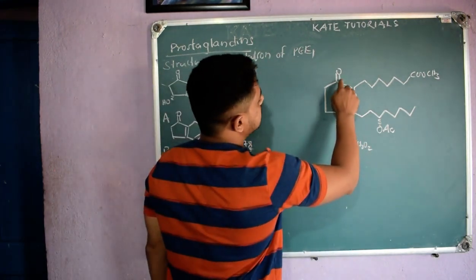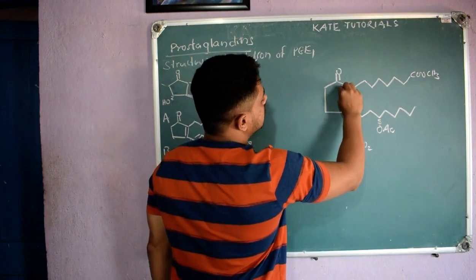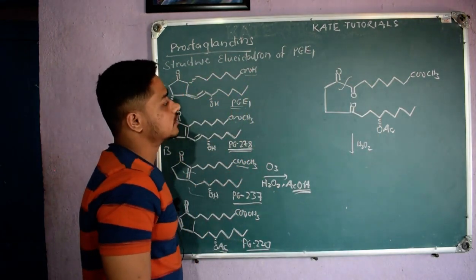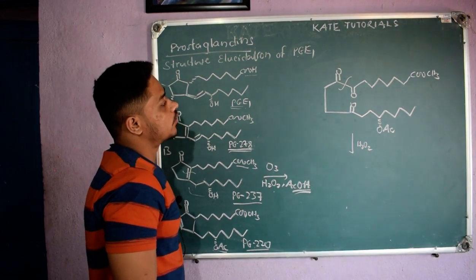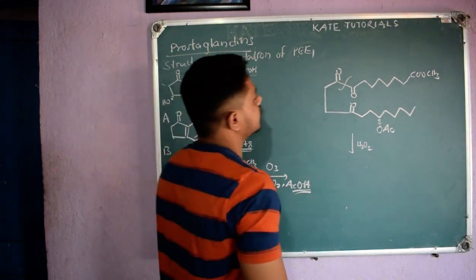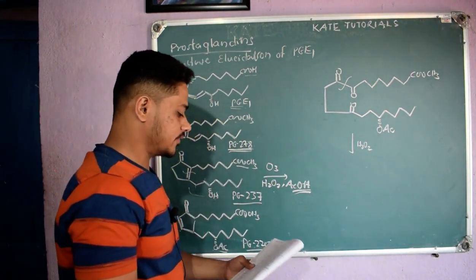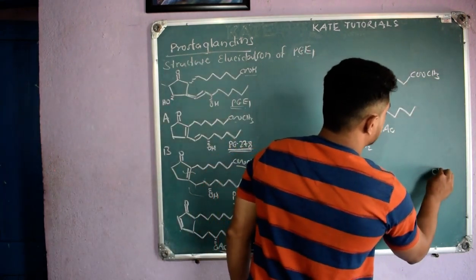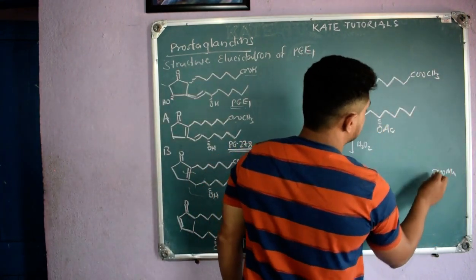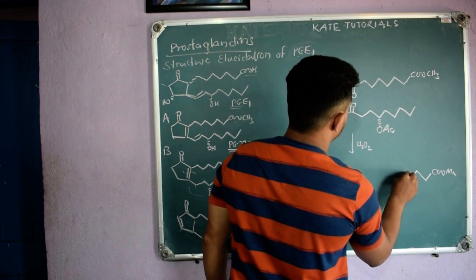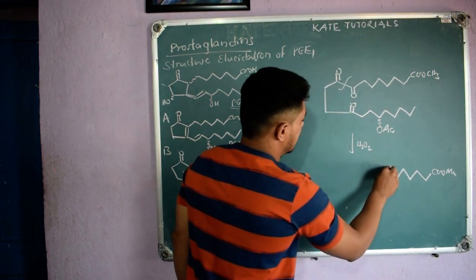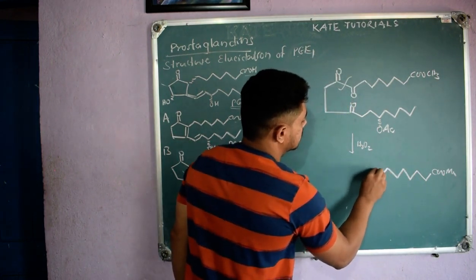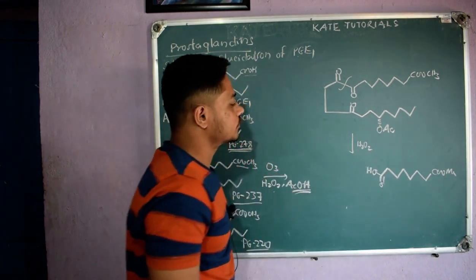We have the oxidizing agent H₂O₂, so the 1,2-diketone bond can be easily broken. After breaking, what we get is: COOCH₃ with one, two, three, four, five, six carbons and COOH on one fragment, and COOH on the other fragment.